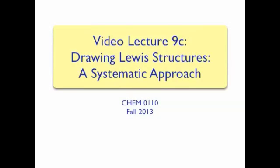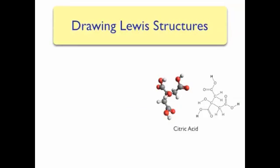Video Lecture 9c: Drawing Lewis Structures, a Systematic Approach. In a previous lecture, we've seen Lewis structures for very simple molecules. However, if we want to draw Lewis structures for more complicated molecules, such as the citric acid molecule shown on the right-hand side of the screen, we need a more systematic approach.